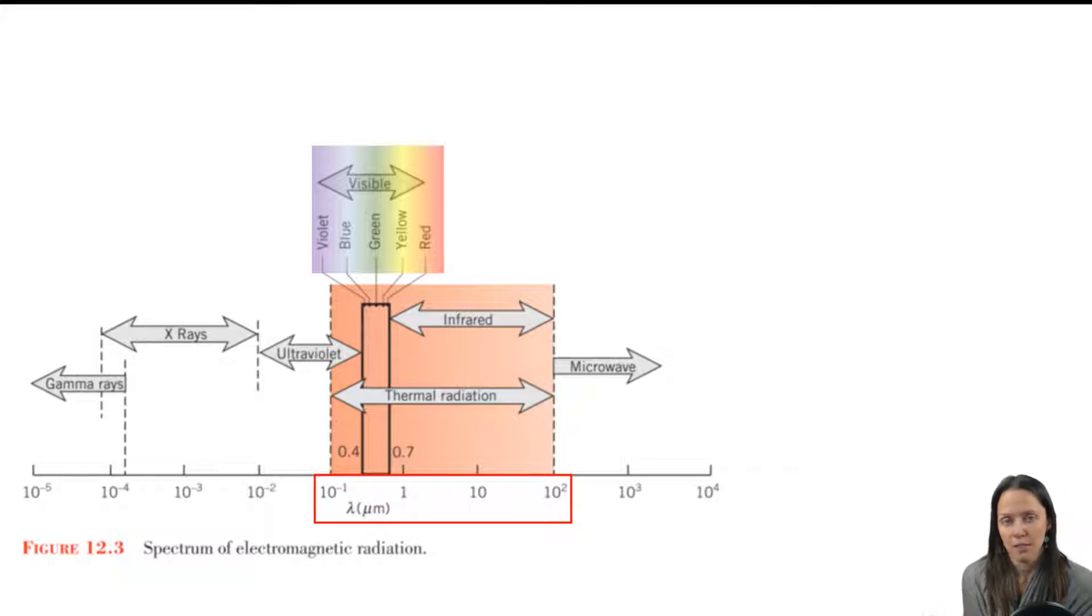You can also see that a small portion of that is in that visible range, about 0.4 to 0.7 microns. And that number is kind of approximate. Visible just means that it's detectable by the human eye. And typically, that's somewhere between 380 and 740 nanometers.